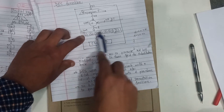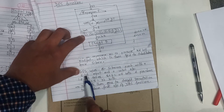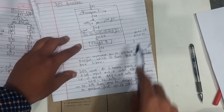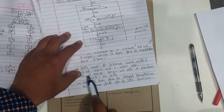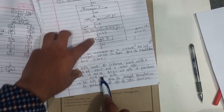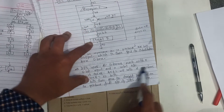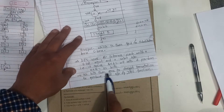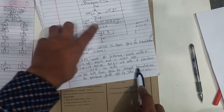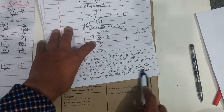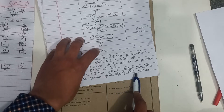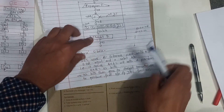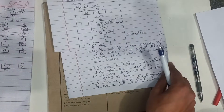DES uses 8 S-boxes, each with a 6-bit input and 4-bit output. So from 8 S-boxes with 6-bit inputs and 4-bit outputs, the total output is 32 bits. These 32 bits then go to a straight permutation to produce the final output of the DES function.